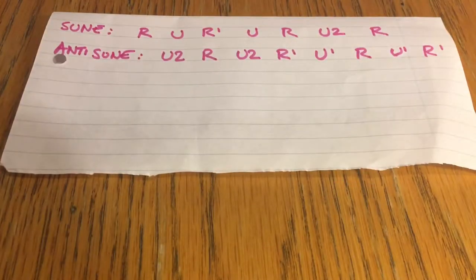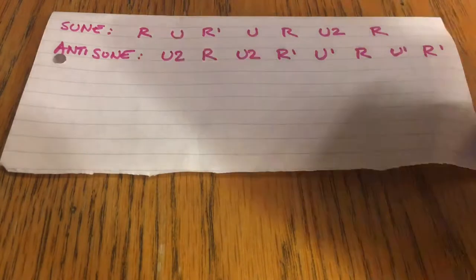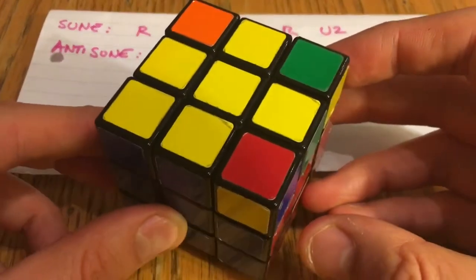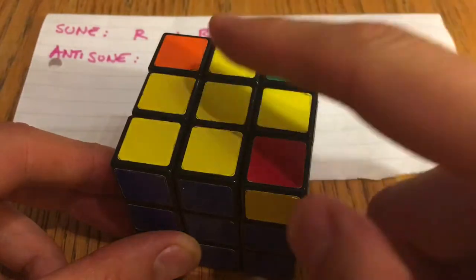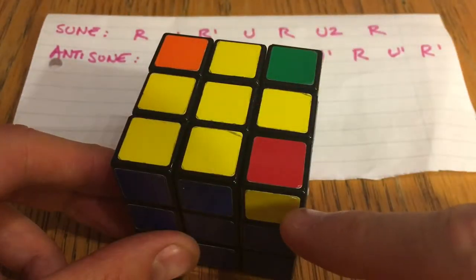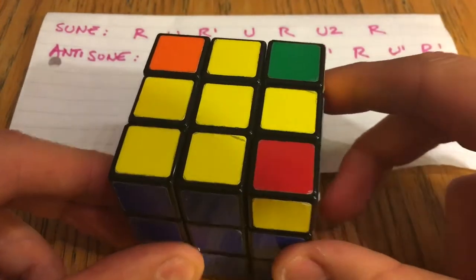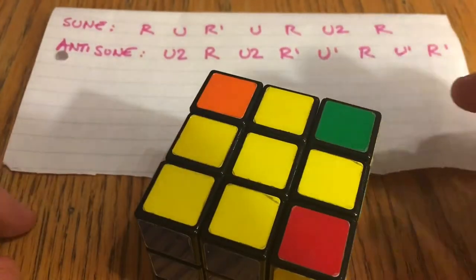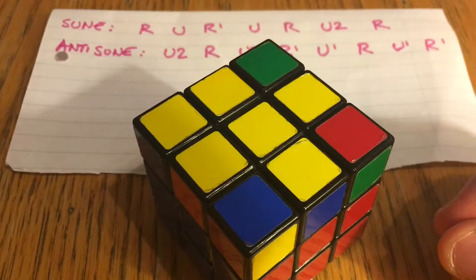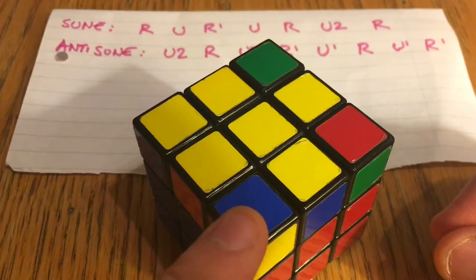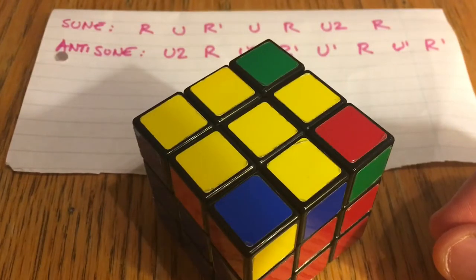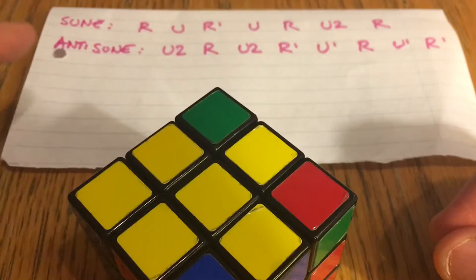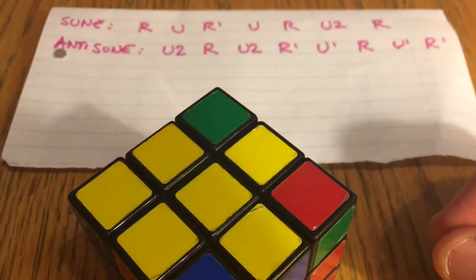So there are the two algorithms and all you have to do therefore is inspect your cube when you've got this pattern, this sort of fish pattern. If the yellow square on the corner is facing downwards, then you perform the Sune algorithm at the top, but if the pattern has the yellow square on the right hand side as in this case, then you just perform the Anti-Sune algorithm.